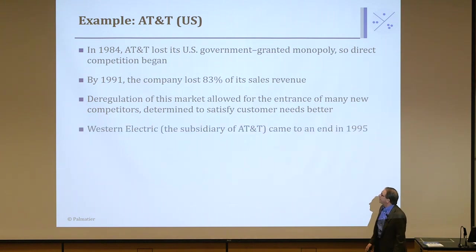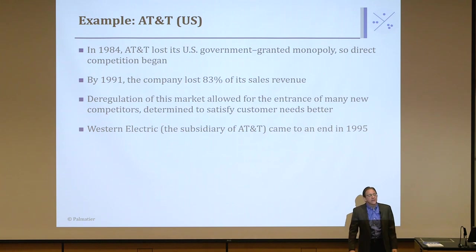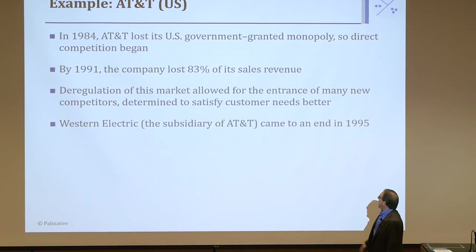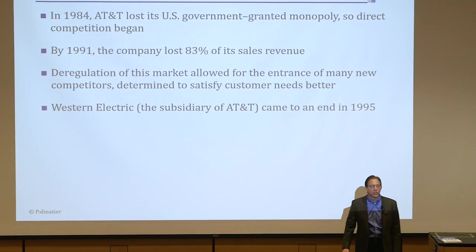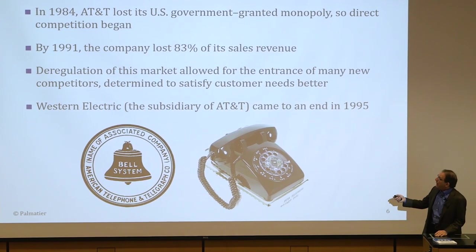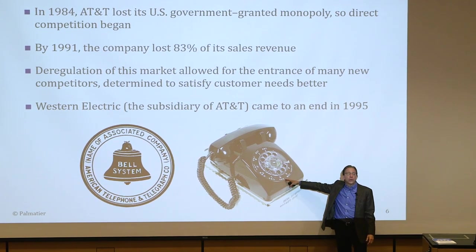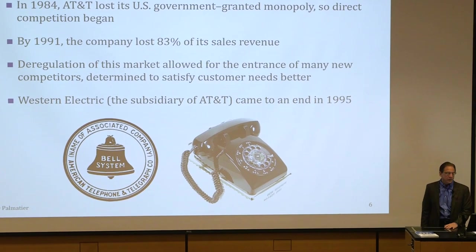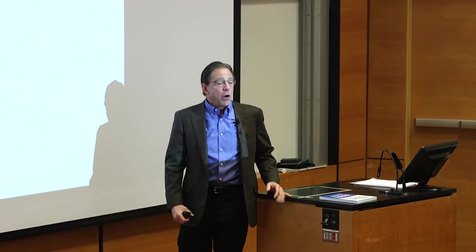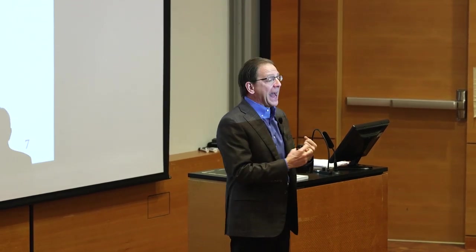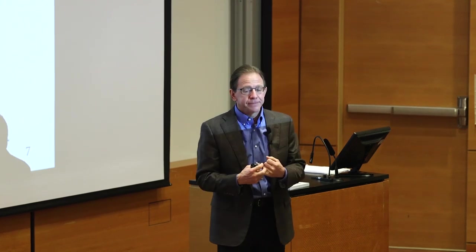The deregulation allowed entrance of many new competitors to satisfy needs. Western Electric was the division of AT&T that made all the electronic equipment. They actually went out of business in 1995 — about 11 years after deregulation — and could never adapt to the idea of customer heterogeneity. It took them 10 years to develop a new phone; now we do very sophisticated products with new iterations every six months. Hopefully you're convinced that pretty much all customers differ in their needs and desires, and that firms need to address that in order to build an effective strategy.